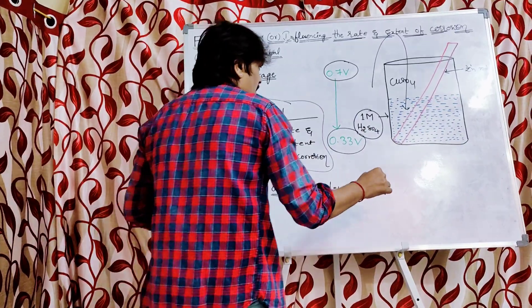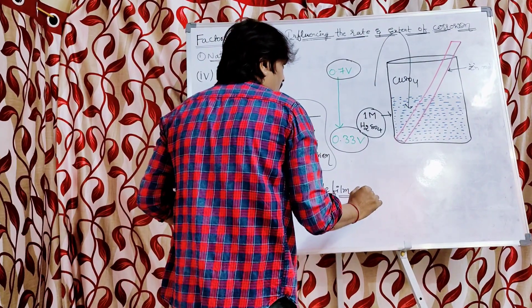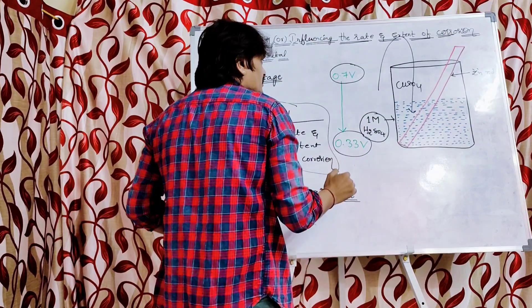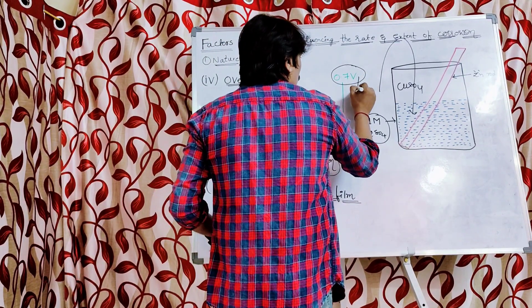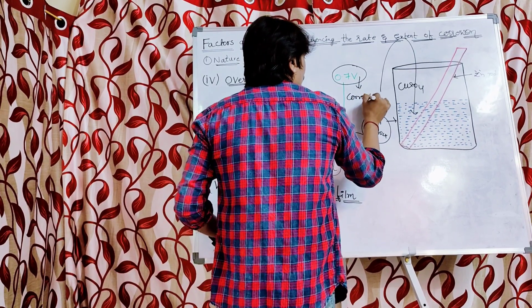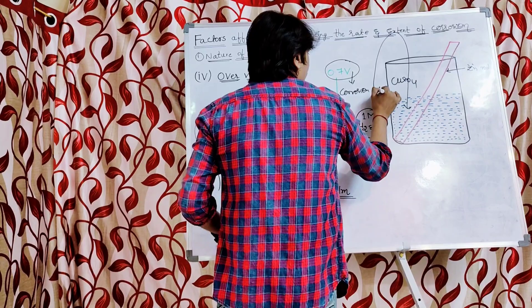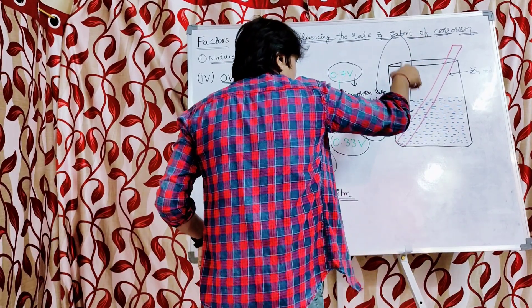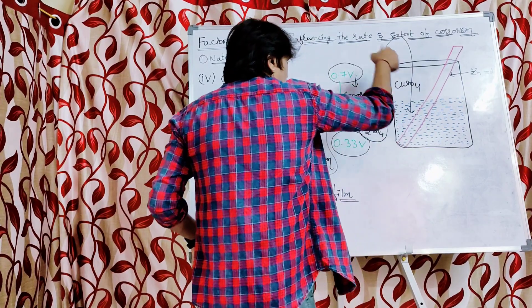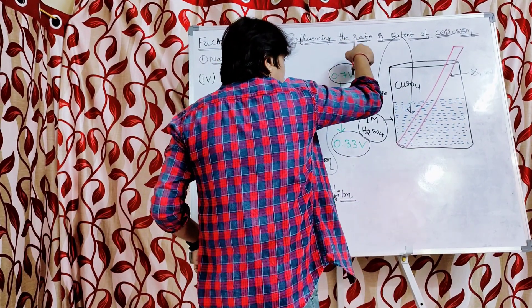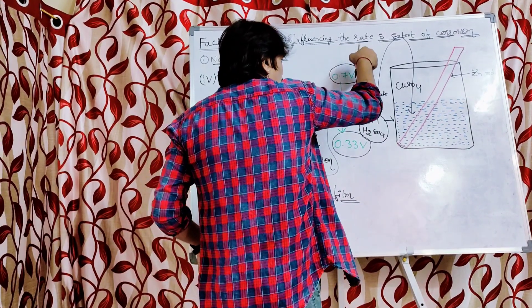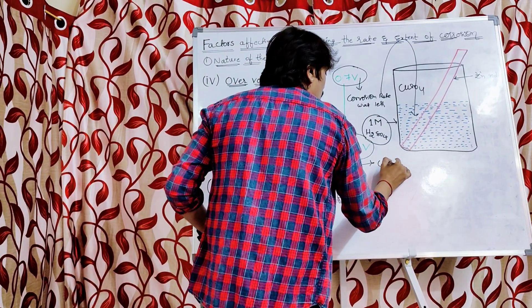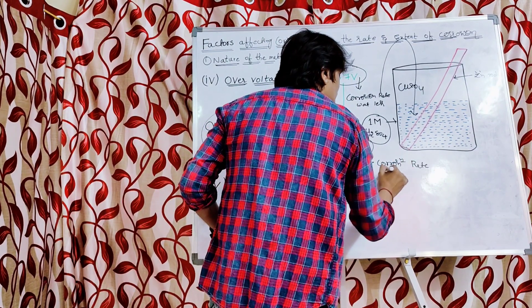When initially there was no copper sulfate, the over-voltage of the zinc rod was found to be 0.7 volts. When it was 0.7 volts, the corrosion rate was less. But when they added copper sulfate to the 1 molar sulfuric acid solution, the new condition caused the over-voltage to drop from 0.7 volts to 0.33 volts, and they observed that the corrosion rate had increased.